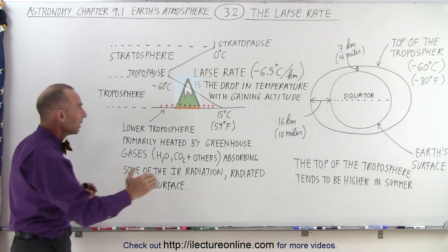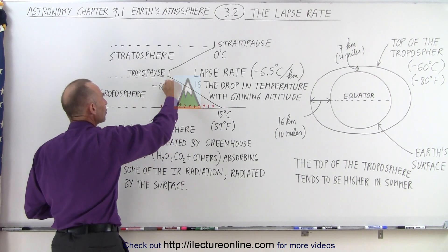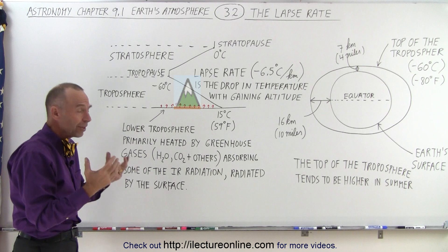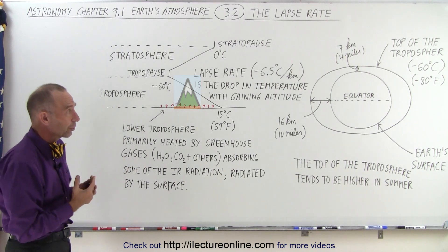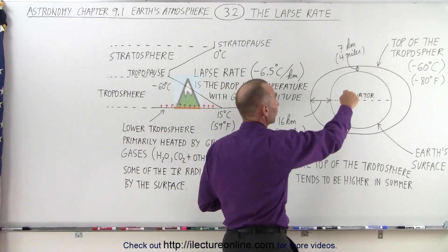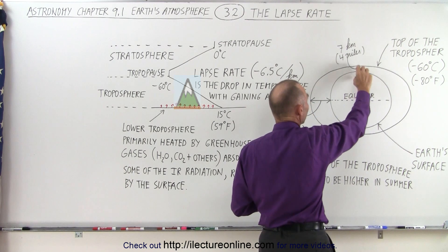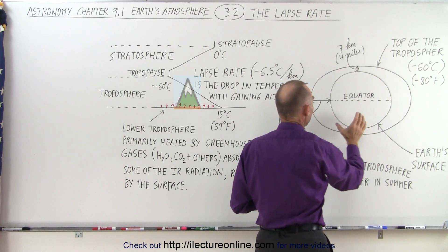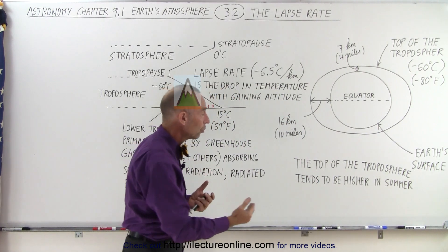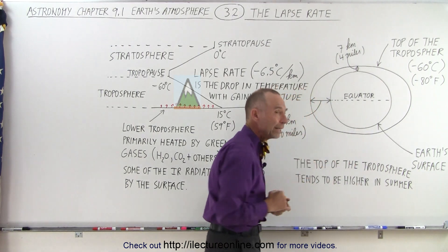We're going to concentrate on the troposphere and how the temperature declines with increasing elevation. The height of the troposphere varies depending on where we are on the surface of the Earth and the season. Typically it's about 6 to 7 kilometers high — about 4 miles — at the polar regions, and as much as 16 kilometers high near the equator. Also, the top of the troposphere tends to be higher in summer and lower in wintertime.